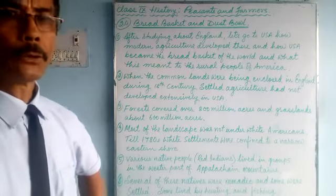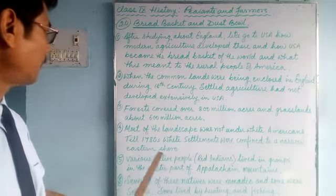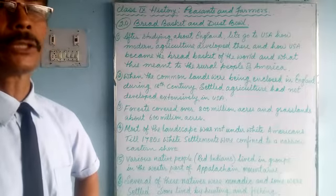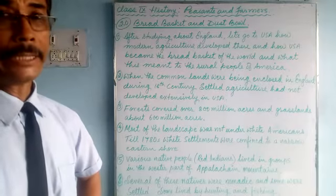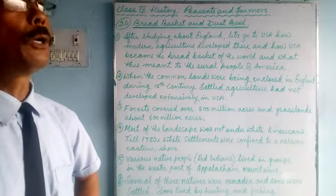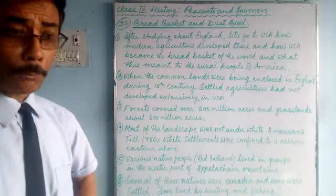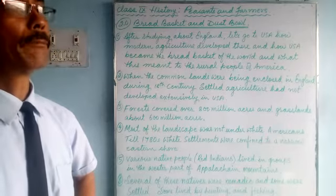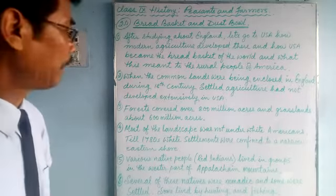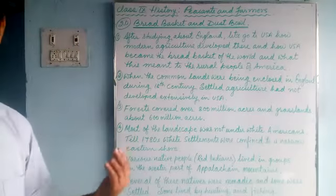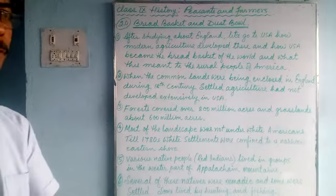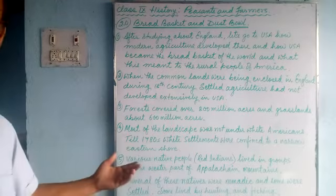The problem started after the 1780s, when white Americans — Europeans who had settled on the eastern shore — crossed the Appalachian Mountains. These native people had to fight in order to survive and protect their areas. Many times they lost and were driven away; many tribes were killed and pushed towards the western side.